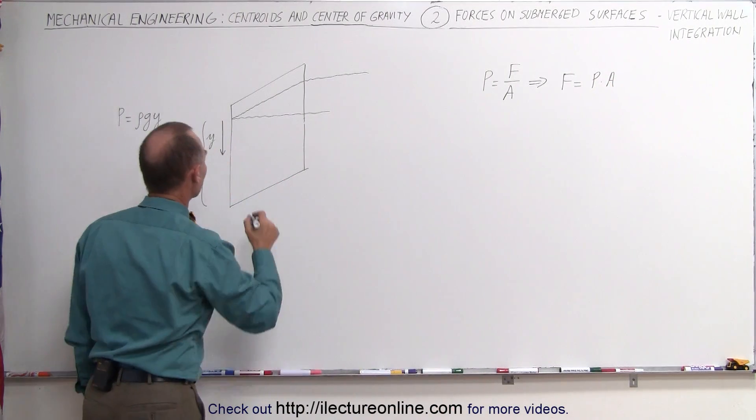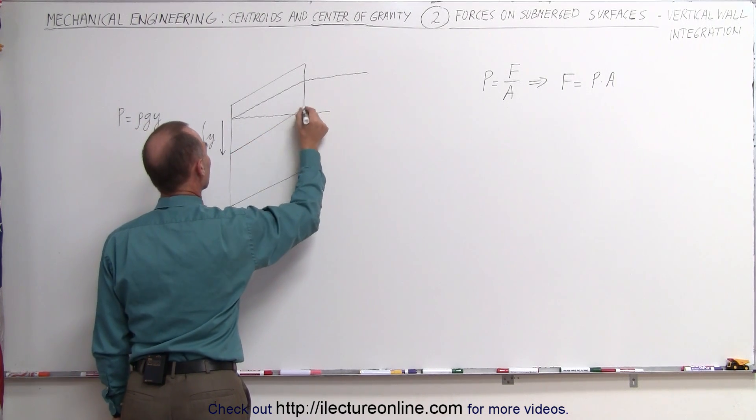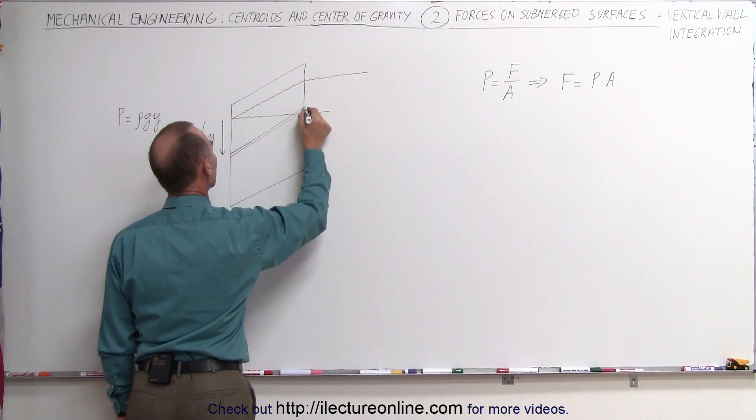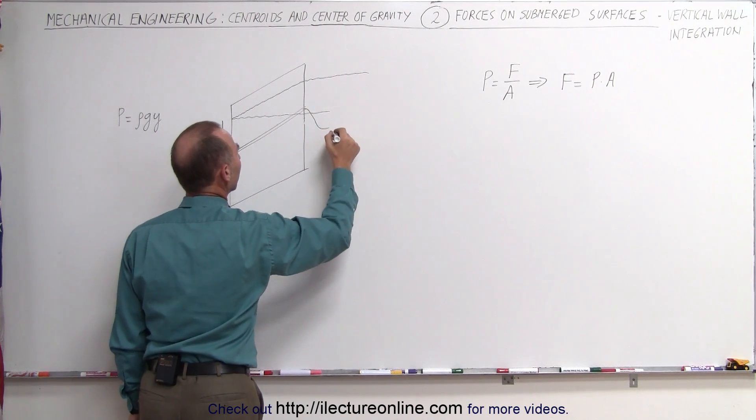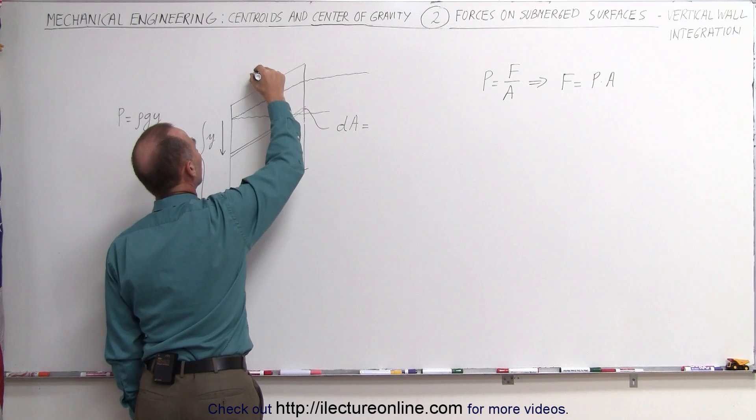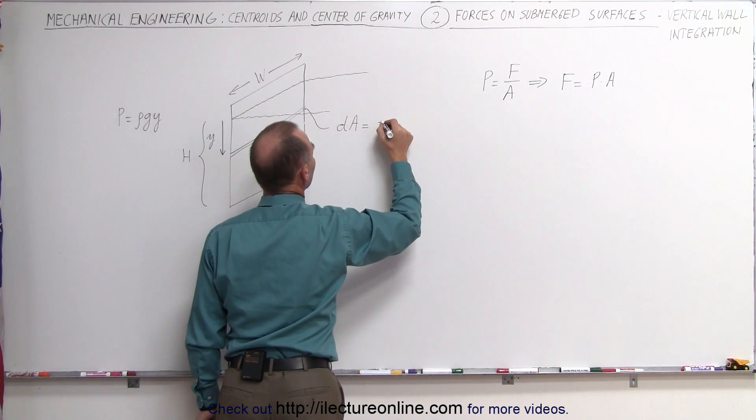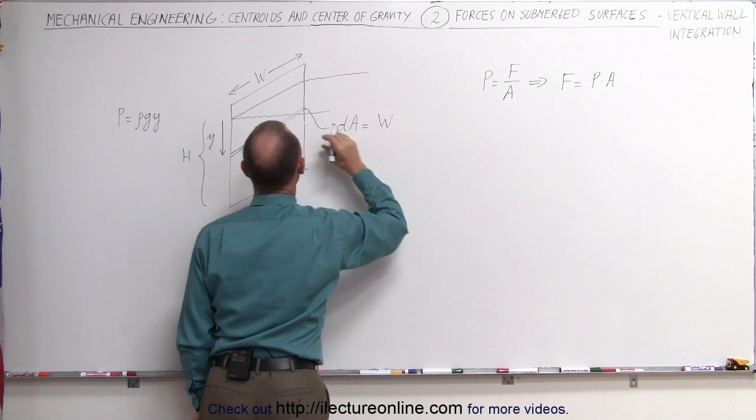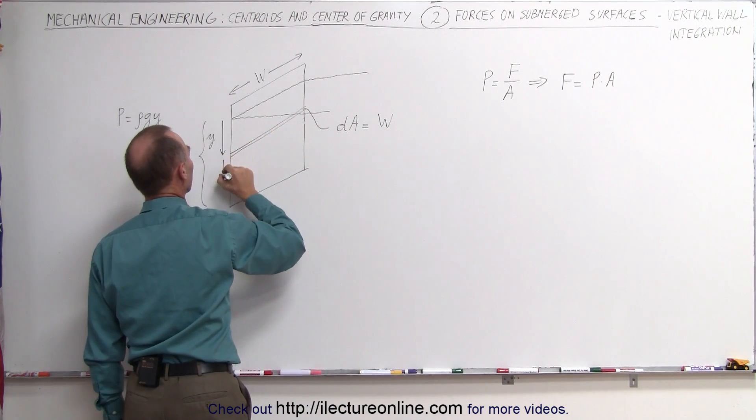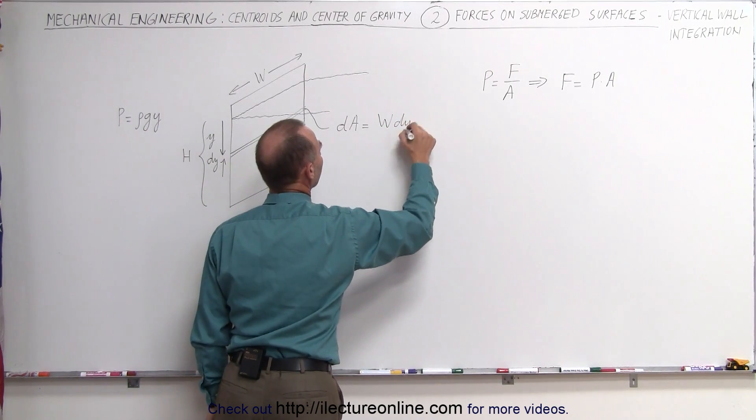So what we're going to do is, we're going to take a small little strip at a depth equal to y. Here's a small little strip on the wall. We can call the area of that strip a small little dA, and the dA would be equal to the width of the wall. Let's call this the width of the wall, that's a w, times the height of the little strip, let's call that a small little dY, a small little change in y.